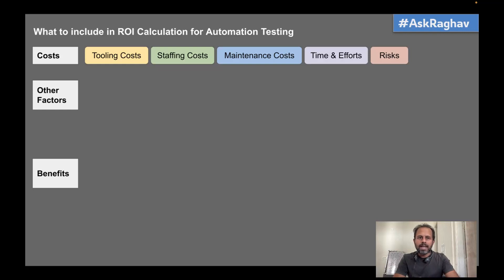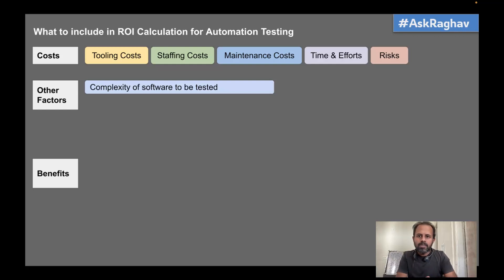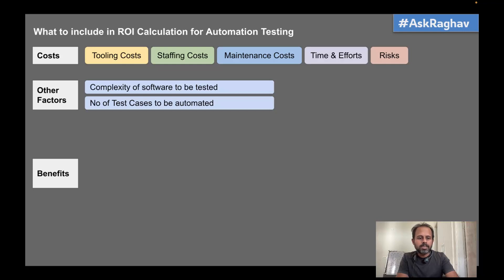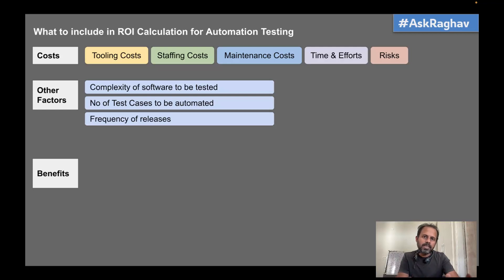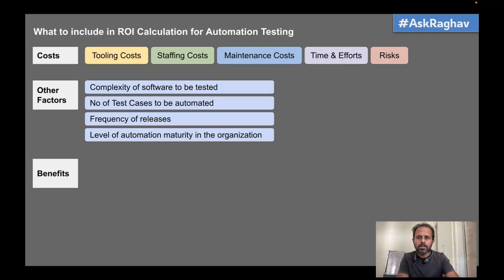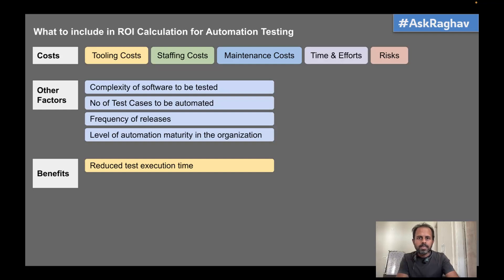We also add risks — what can be the risks — all this comes under costs. When we talk about other factors, it can be the complexity of the software or platforms, number of test cases to be automated, frequency of releases — which varies from project to project. Some organizations release every week, some every month, some every two weeks. We also consider the level of automation maturity — skills, people ready for automation, platforms, and tools.